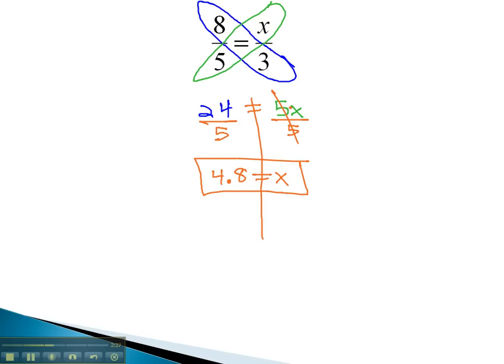We can solve the proportion the same way regardless of where our variable is by simply using the cross product, multiplying the diagonal, and solving the resulting equation.